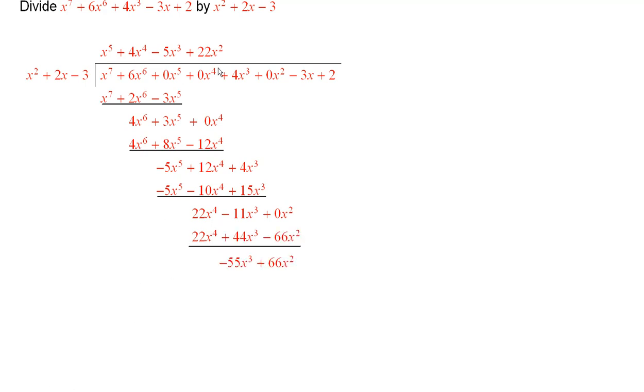So I multiplied 22x squared times this. Then subtracted and then this is what results. It's right here. So now the next thing to do is to bring down the next term, namely this minus 3x. So I'll do that now.